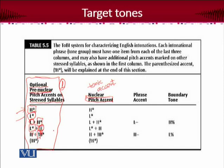But the second, third, and fourth columns are really important, because we are required for every intonational phrase to talk about the tonic accent — within this framework called the nuclear pitch accent. So what's the basic tonic accent of the phrase? High, low, high preceded by low, low followed by high, high along with high, and then downstep high.